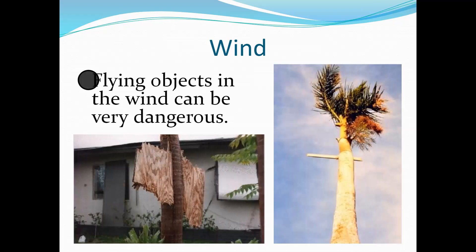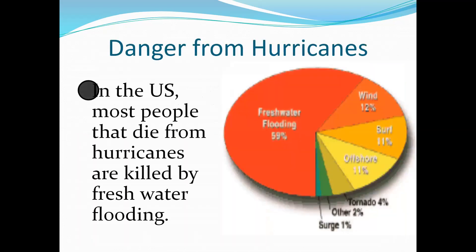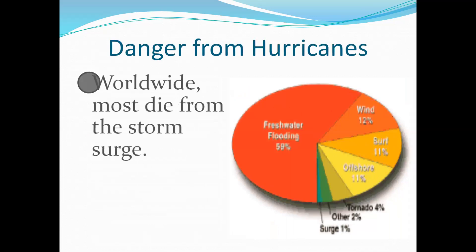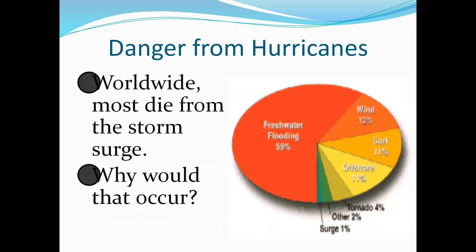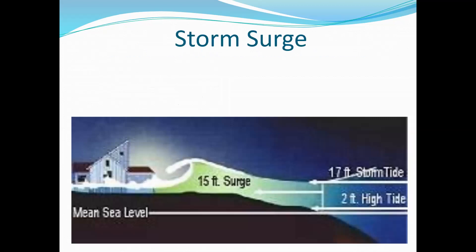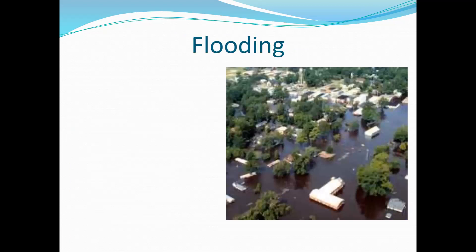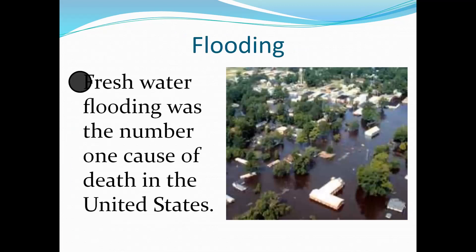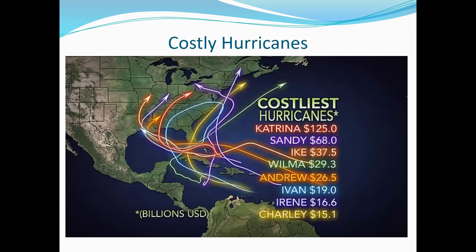There are pieces of wood going straight through trees because of the wind. In the United States, most people are killed from freshwater flooding during hurricanes. In the rest of the world, most people die from storm surge — which happens when those waves reach a certain height and rush onto land. Freshwater flooding is the number one cause of death from hurricanes in the United States. This graphic shows the costliest hurricanes in U.S. history — the colors and lines show the path those storms took. For example, Katrina is the red line — it came through Louisiana, through New Orleans, and cost about $125 billion.